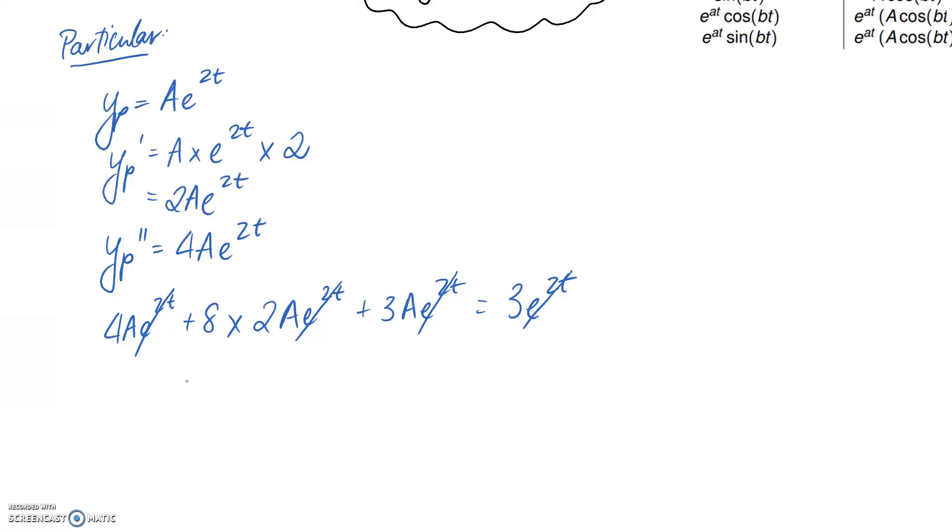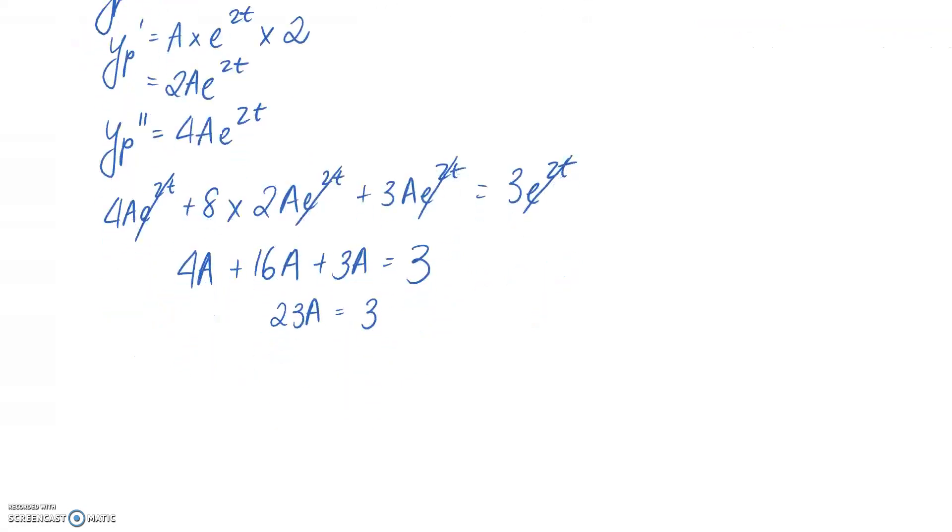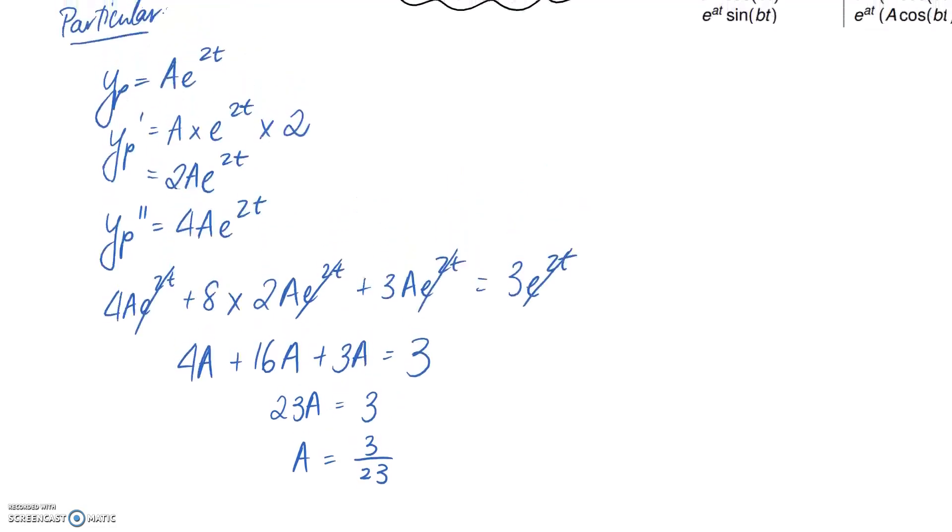So I can rewrite this a bit nicer, as 4A, 8 times 2 is going to leave me with 16A, and I've got 3A, and all of that has to be equal to the 3. So if we put this together, we're going to end up with 23A is equal to 3, and that means that A on its own has to be 3 divided by 23. So we've now solved for that constant that was appearing in the equation.